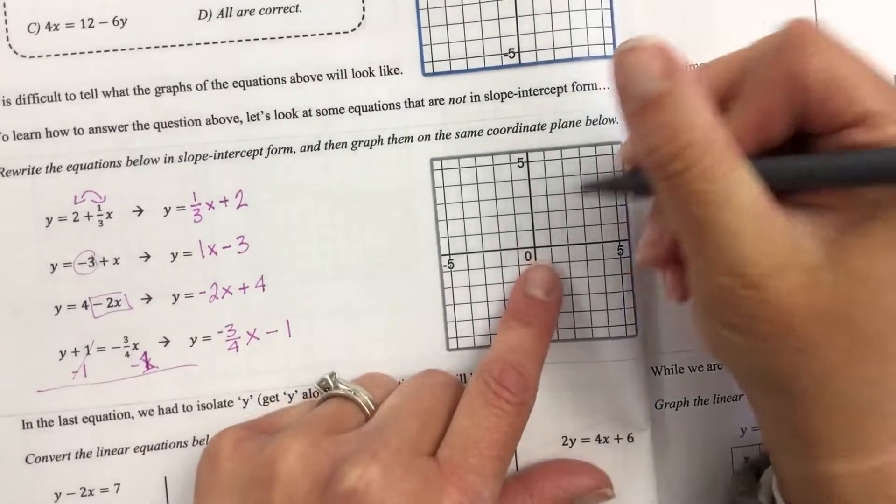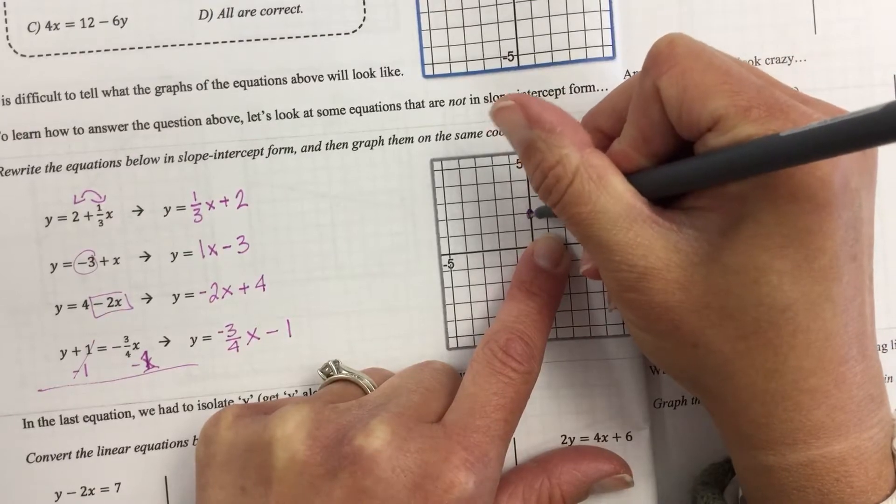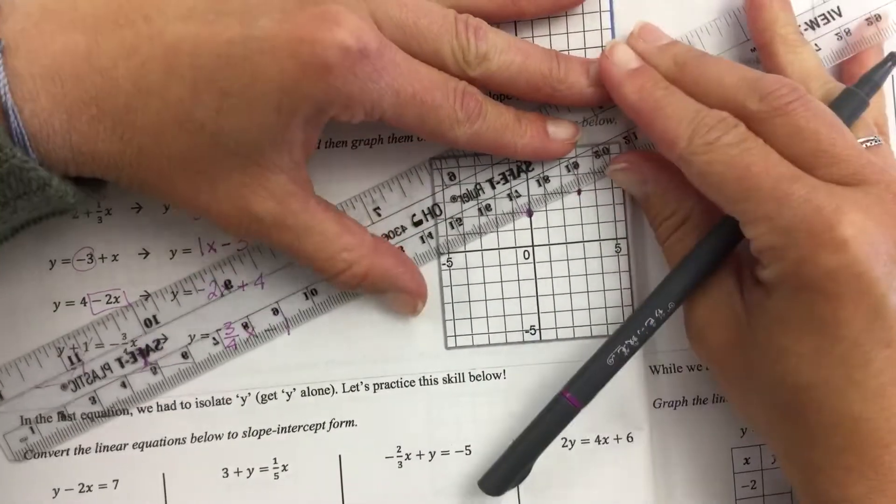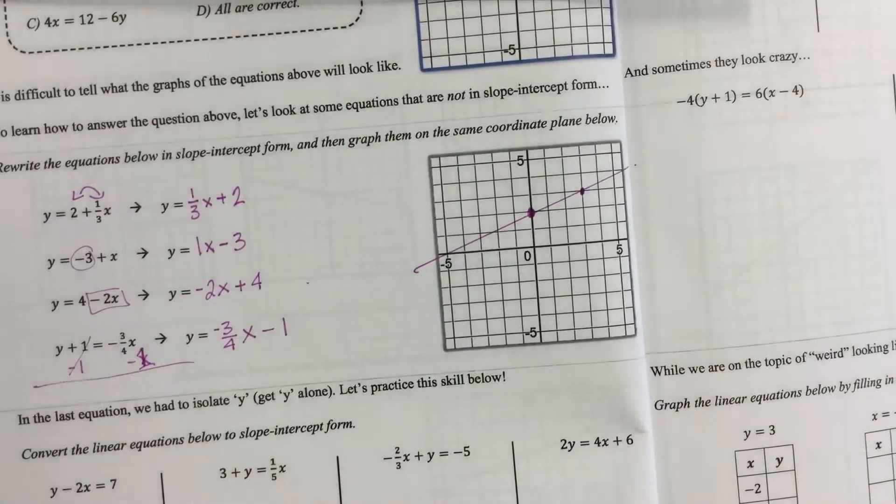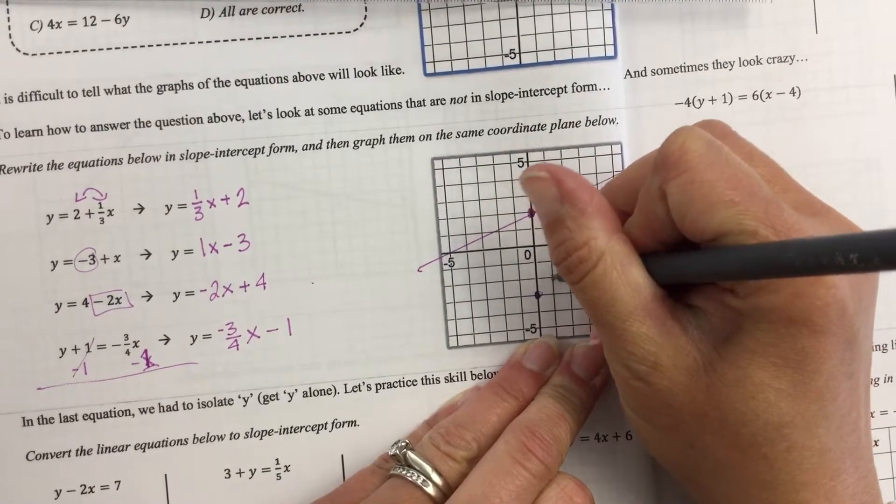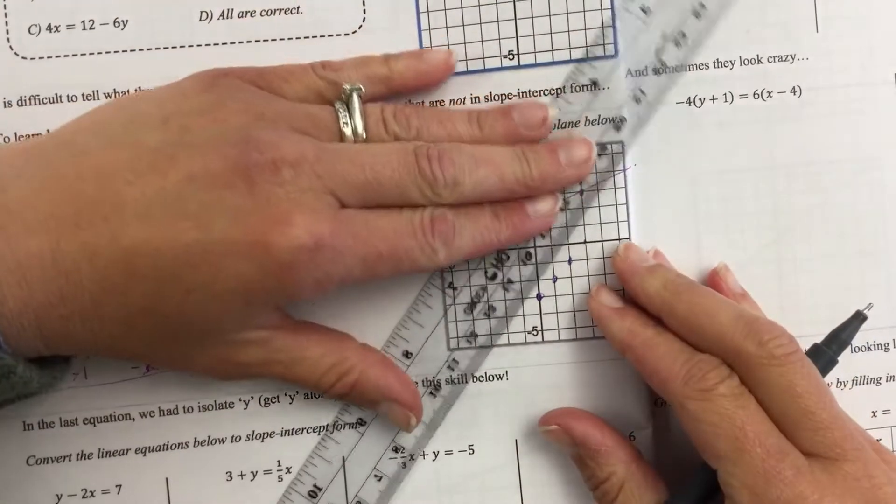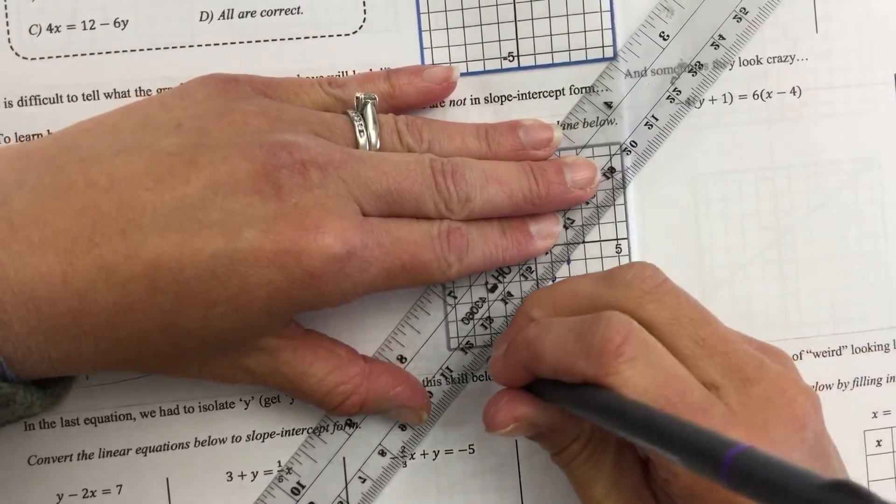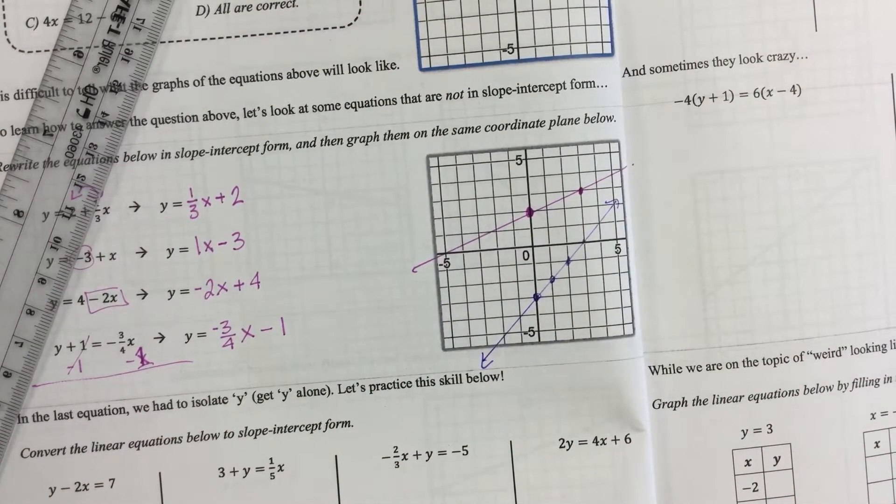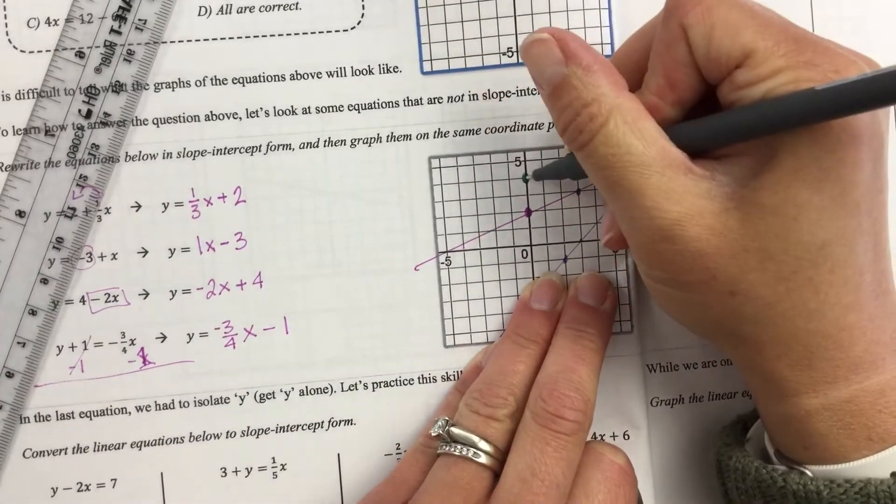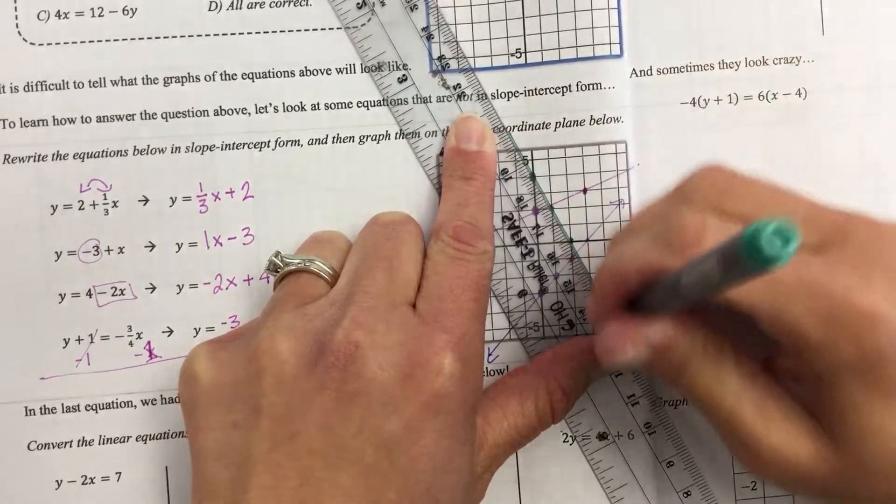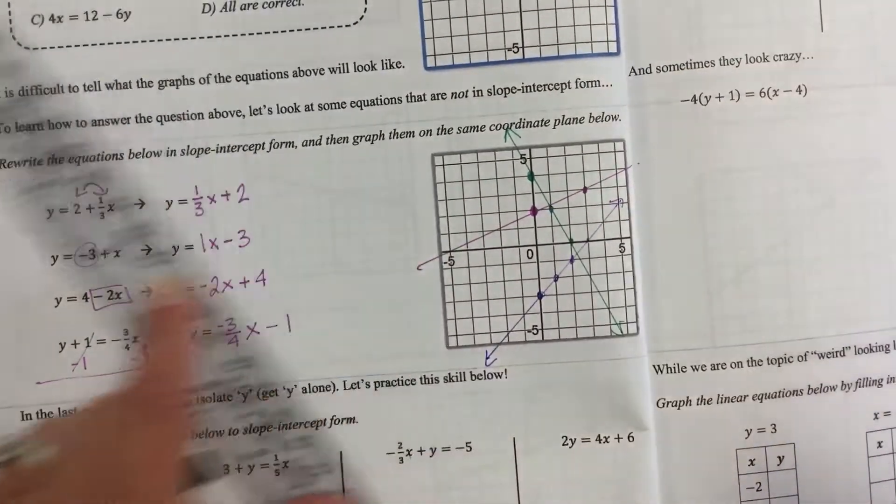Okay, we can move things like that. So if we are going to graph these, the first one would start at positive 2, up 1 over 3. There's my first one. My second one, I start at negative 3, and my slope is a positive 1, up 1 over 1. My third one starts at positive 4, it's a negative, so down 2 over 1 and down 2 over 1.